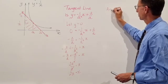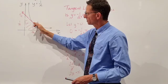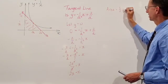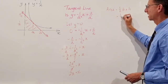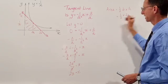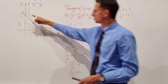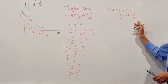So to determine the area created by the tangent line, which is based on the reciprocal function 1 on x, we can now multiply the triangle base by the height and we get a half multiplied by 2a, that's the base of our triangle, multiplied by the height, which is 2 on a.